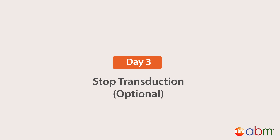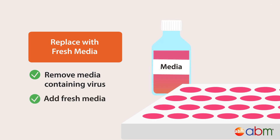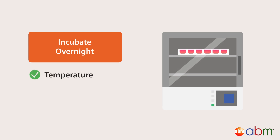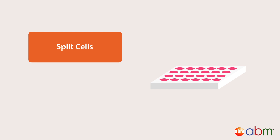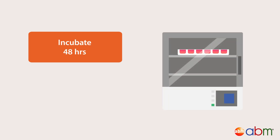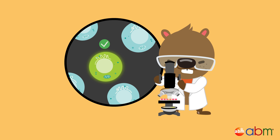Stop transduction: remove the culture medium containing the virus and replace with 1 ml of fresh complete culture media. Incubate cells at the appropriate temperature and CO2 conditions overnight. Observe cell growth — depending on the growth rate of your target cells, split the cells at a ratio of 1 to 3 or 1 to 5, then continue incubation for another 48 hours in complete culture media. If your lentivirus carries a fluorescent marker, you can check for successful infection under a fluorescent microscope.